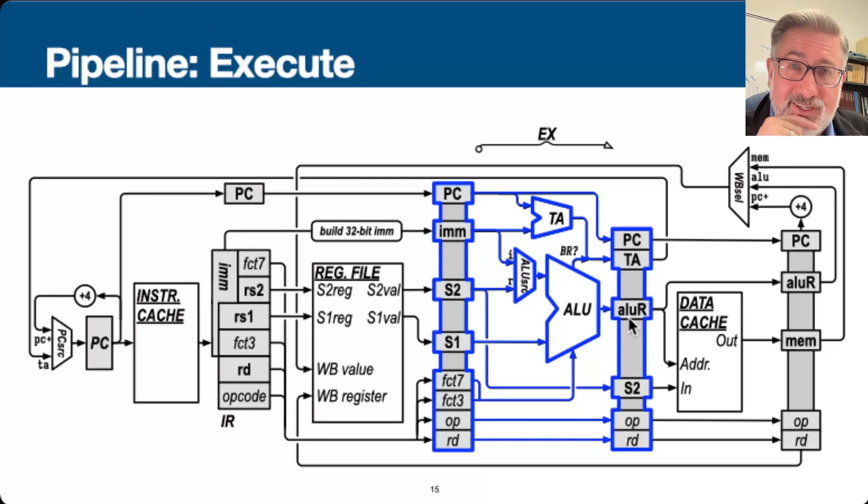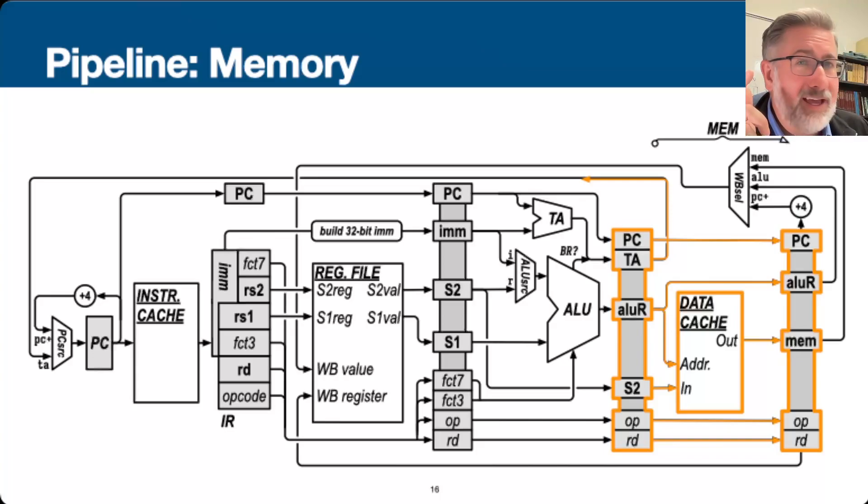After execute is done, then we do the memory phase. And again, maybe our instruction doesn't have memory access. The memory phase will be wasted. But it is more efficient to make the pipeline operational than to try to customize each individual step. The way pipelining works, the whole point of pipelining, is that we make our instructions look as much like each other as we can, so that we can overlap their execution as much as we can. So if we don't have memory access, this is a wasted phase, but the end result is more efficient execution anyway.